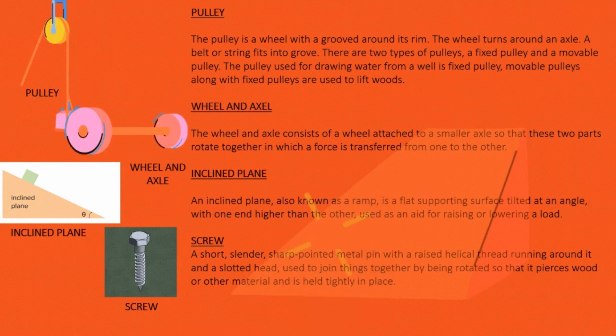Wheel and Axle: The wheel and axle consists of a wheel attached to a smaller axle so that these two parts rotate together, in which a force is transferred from one to the other.